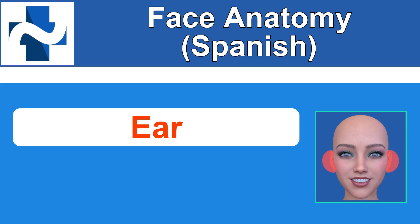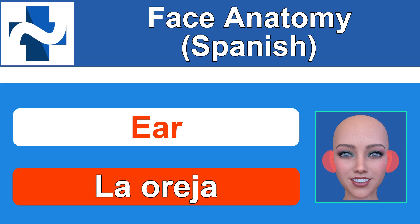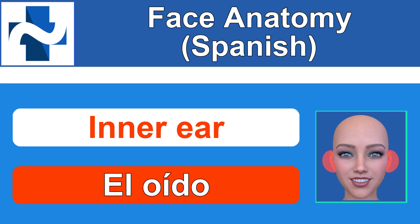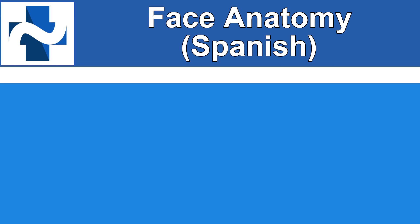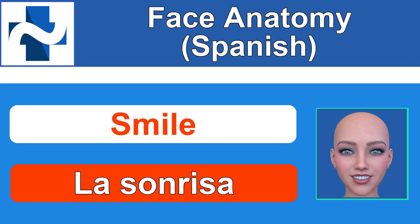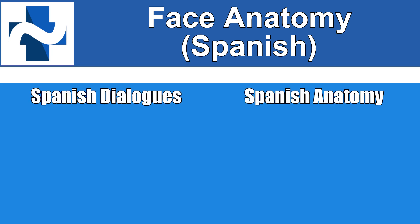Ear — la oreja. La oreja. And there's also an inner ear, but we'll hit that on a different lesson. But real quick, it's el oído — el oído — that's the inner ear. Smile — I'm putting this in: how do you say smile? That's not strictly an anatomical term, but kind of is — la sonrisa. La sonrisa. Thanks for watching, I'll see you next time.